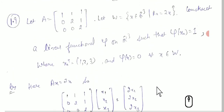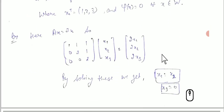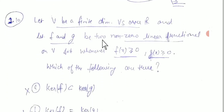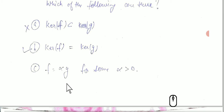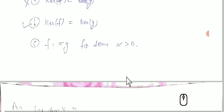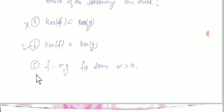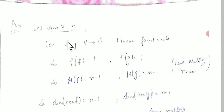For the last question, let V be a finite-dimensional vector space with two linear functionals f and g satisfying f(x) ≥ 0 whenever g(x) ≥ 0. We need to determine which options are true: kernel f ⊂ kernel g (proper subset), kernel f = kernel g, or f = αg for some α > 0. Let dimension of V = n. Both f and g are linear functionals from V to R, so rank of f = rank of g = 1, giving nullity of f = nullity of g = n−1, meaning dim(kernel f) = dim(kernel g) = n−1.